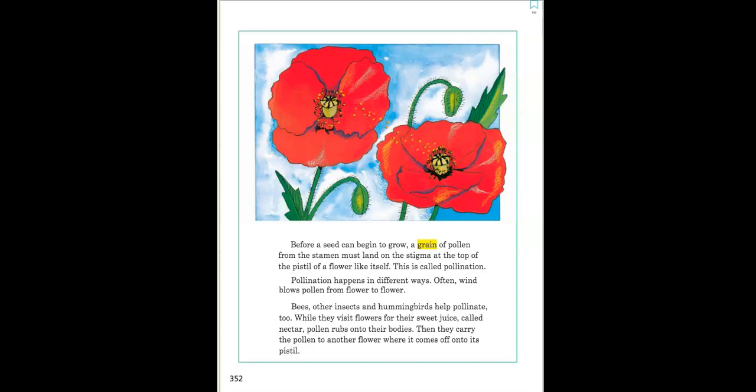Pollination happens in different ways. Often wind blows pollen from flower to flower. Bees, other insects, and hummingbirds help pollinate too. While they visit flowers for their sweet juice called nectar, pollen rubs onto their bodies. Then they carry the pollen to another flower where it comes off onto its pistil.